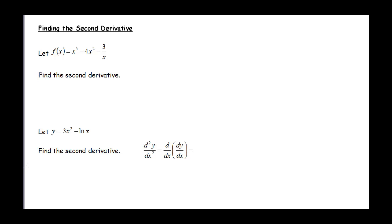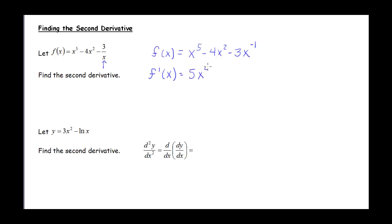Let's practice finding a few second derivatives. In order to find the second derivative, we always have to find the first derivative. Looking at our function f of x, we would probably need to rewrite that term as x to the fifth minus 4x squared minus 3x to the negative 1. Our first derivative is going to be 5x to the fourth minus 8x plus 3x to the negative 2. To find the second derivative, we just take the derivative of our first derivative: 20x cubed minus 8 minus 6x to the negative 3.